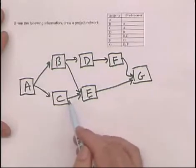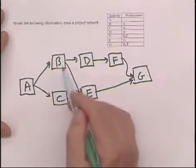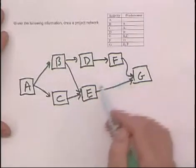E can't start until more than one activity are completed. In this case, it's B and C. In the case of G, it's F and E.